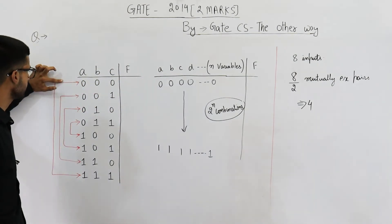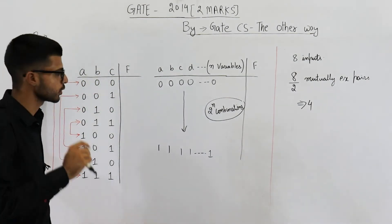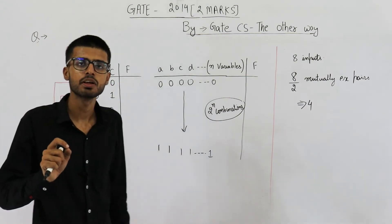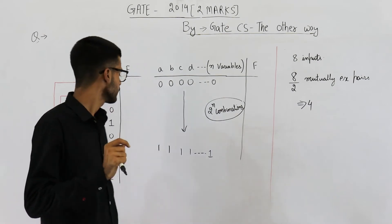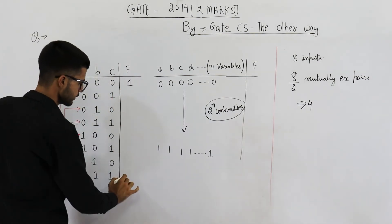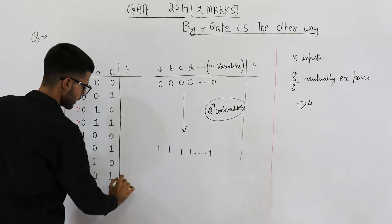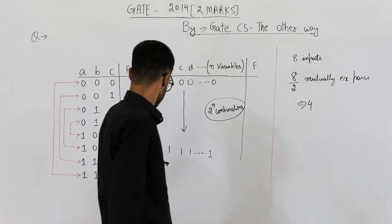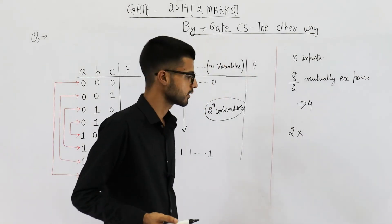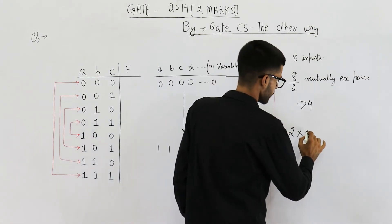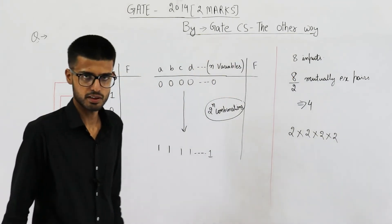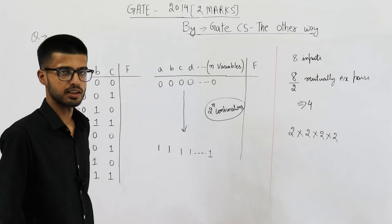If you consider any one pair, you have two choices: either it can be 1-0 or it can be 0-1. For each pair you have two choices — you can place the 1 in either position. There are two choices for each of the four pairs, so the answer for three variables is 2 raised to the power 4, which equals 16.